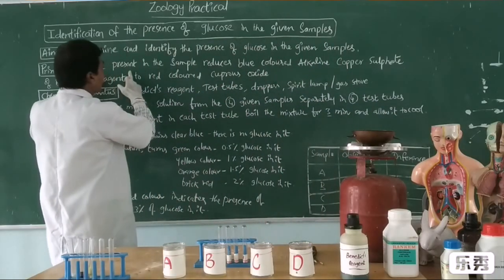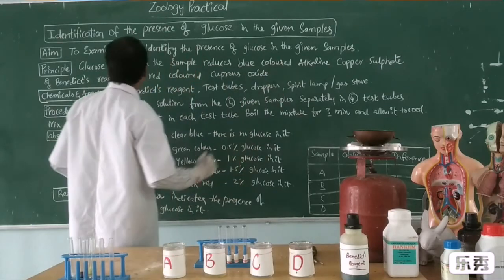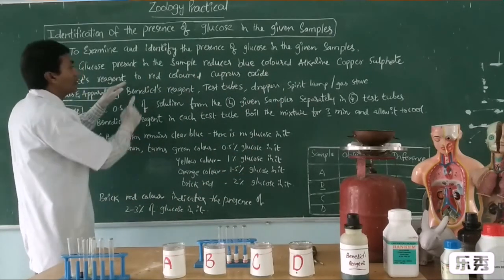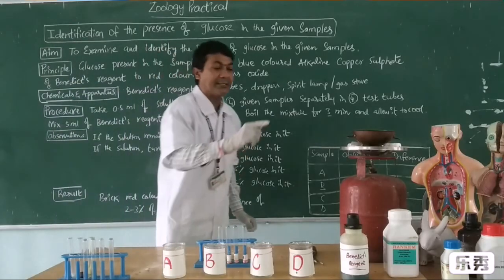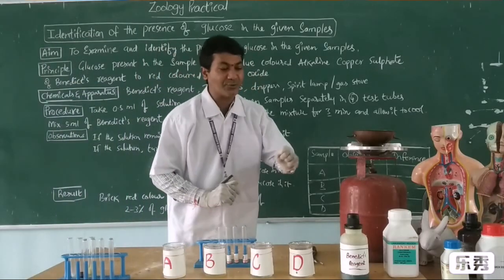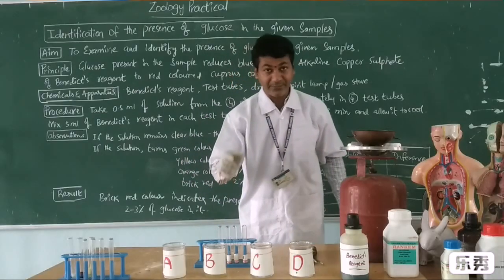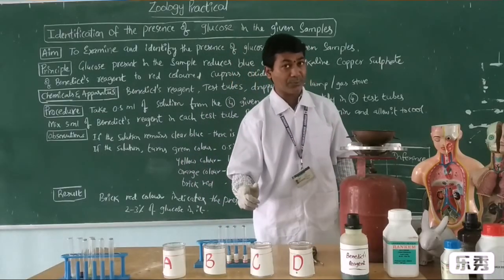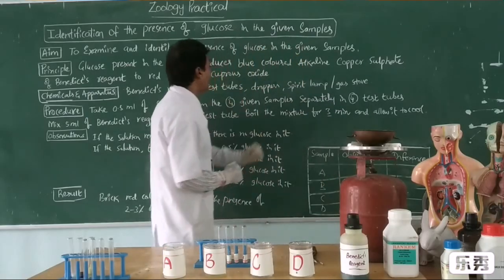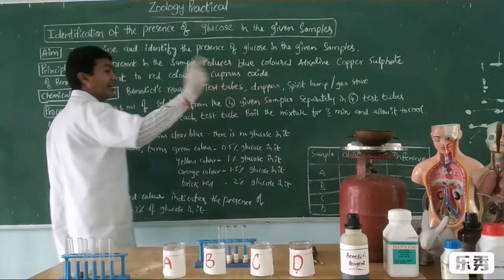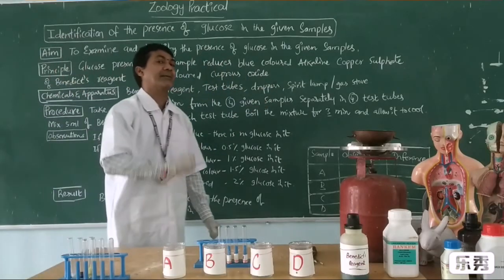Glucose present in the sample reduces the blue-colored copper sulfate. Copper sulfate is there, so it is blue in color. If the sample contains glucose, that glucose reduces copper sulfate into cuprous oxide, which is red in color. By this we can identify that the sample contains glucose.